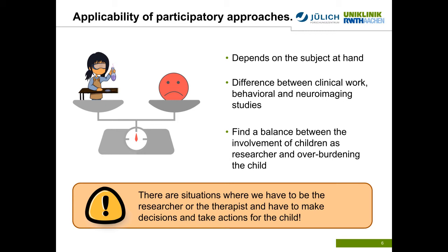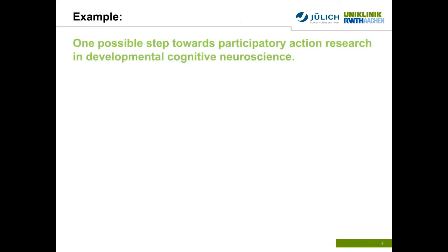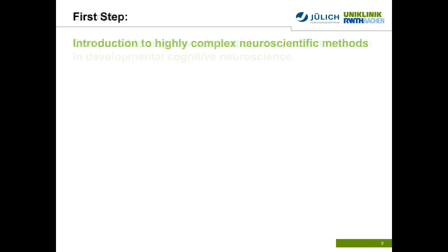We should always try to find a balance between the involvement of children as researchers and overburdening the child. And we must keep in mind that there are instances where we have to be the researcher or the therapist and have to make decisions and take actions for the child. Now, in the following, I would like to demonstrate one example of a step towards participatory action research, particularly for neuroscience, because in the field of developmental neuroscience, involving children in participatory approaches requires, as a first step, an introduction of highly complex neuroscientific methods.